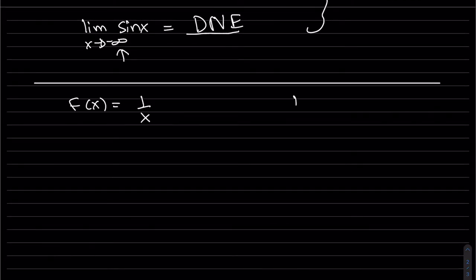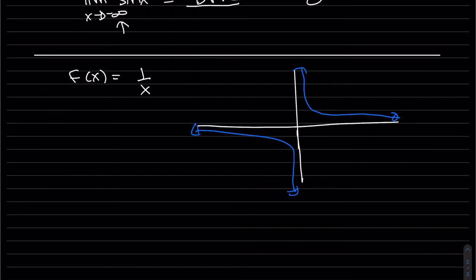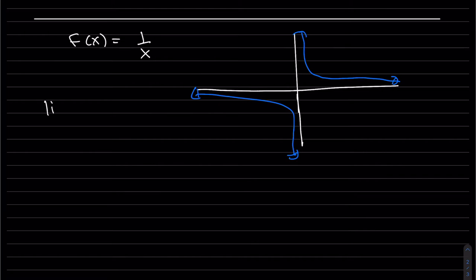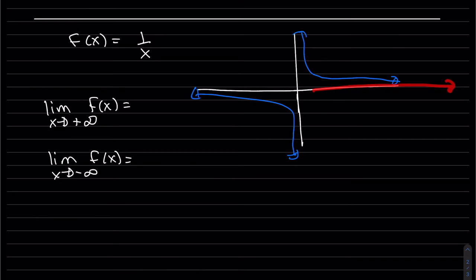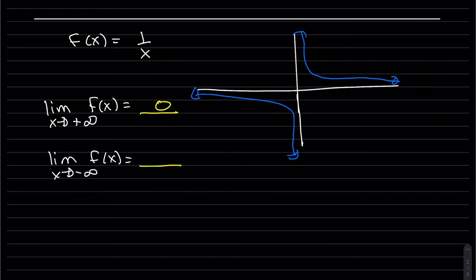Here's the basic graph of 1/x — remember the vertical asymptote at x equals zero from the last video. We can see that as x approaches positive infinity the graph is approaching zero, and as x is approaching negative infinity the graph is also approaching the y value of zero.